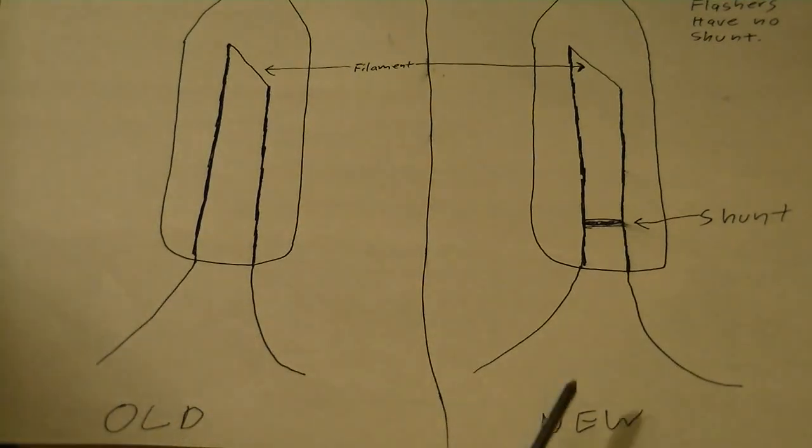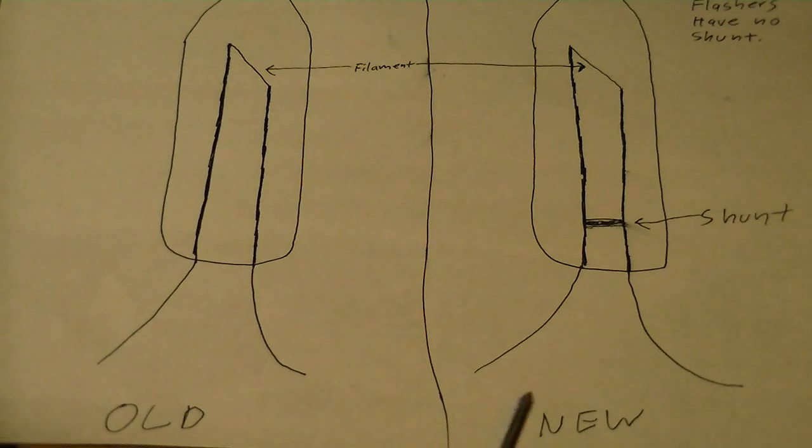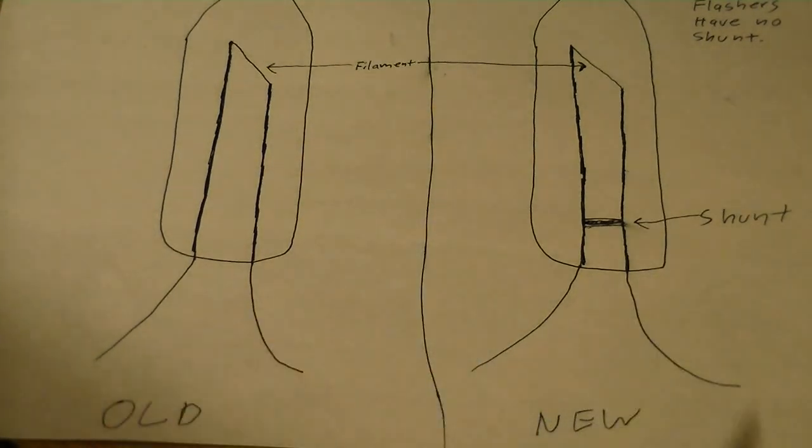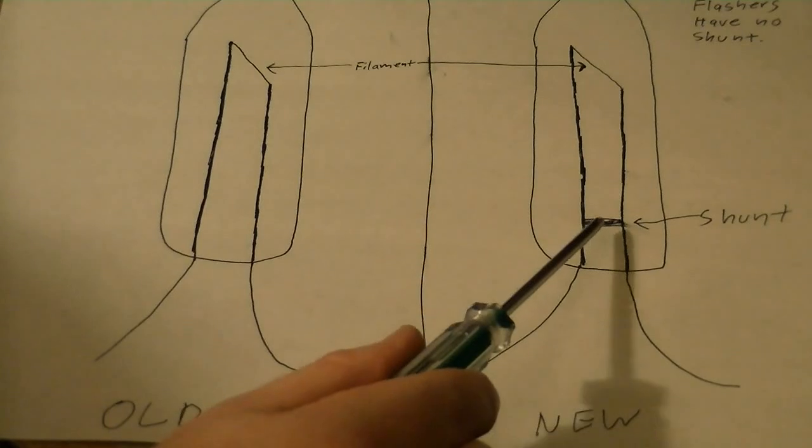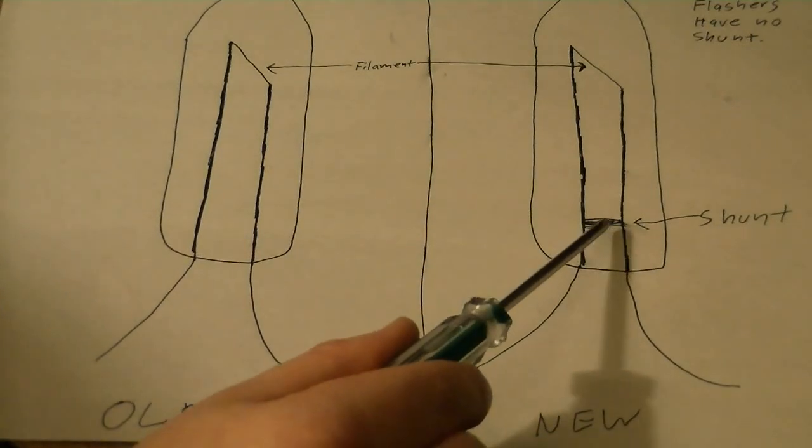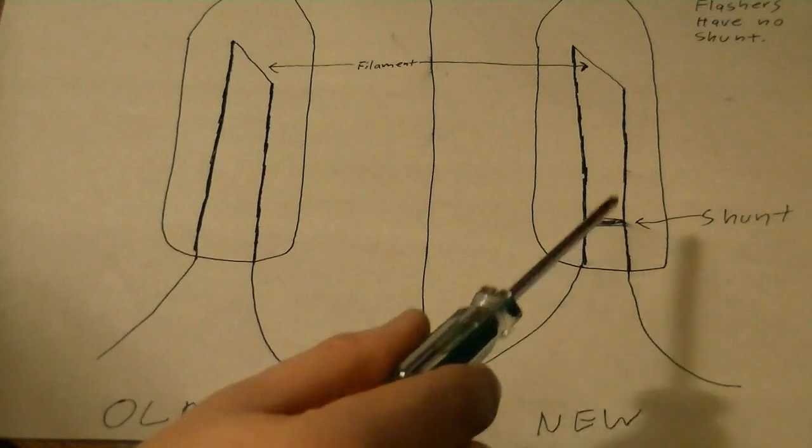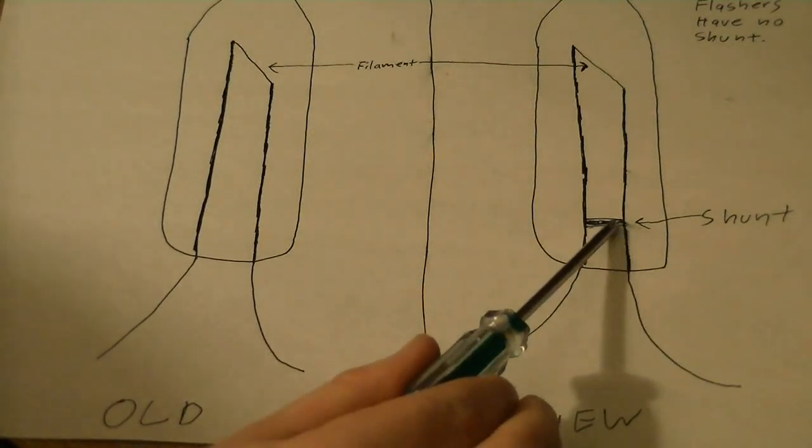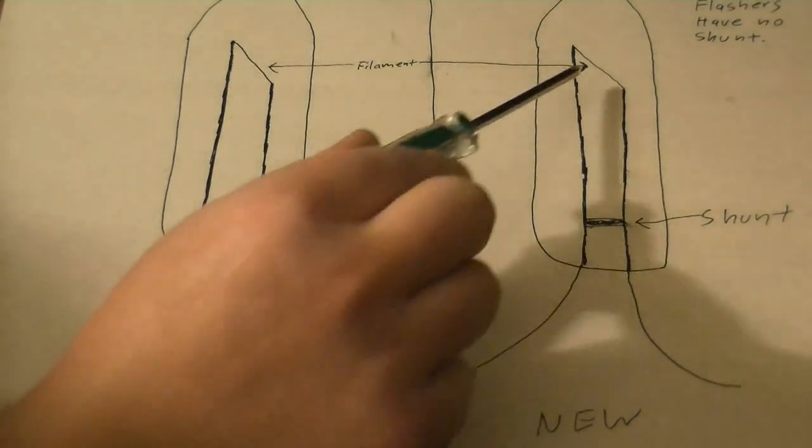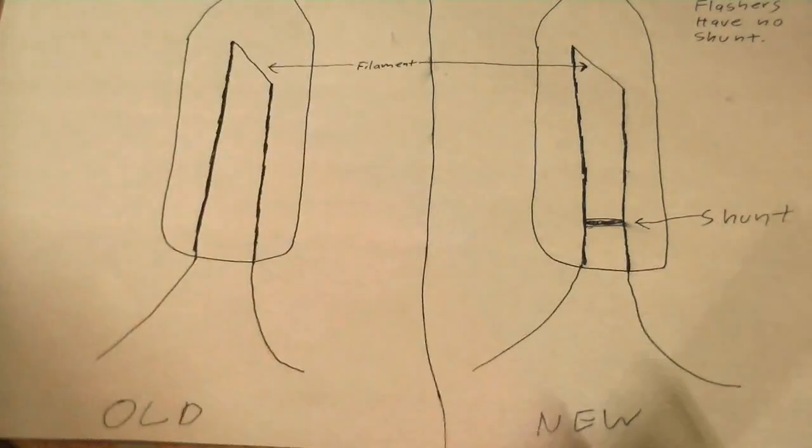Now the new bulb is a little bit different. I mean this basic design, they look the same on the outside, but there's an additional shunt in here. When this filament is burning, the shunt don't do nothing. It has a high resistance because of a coating on it.